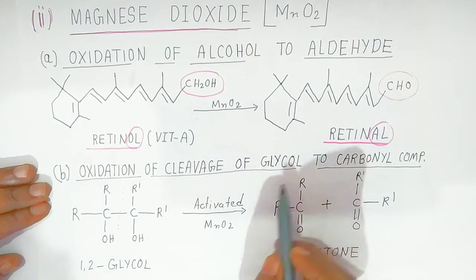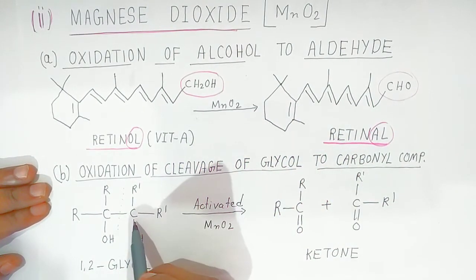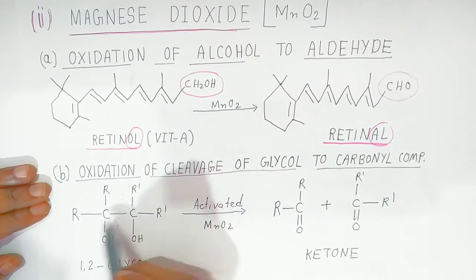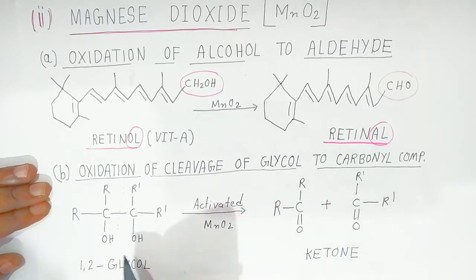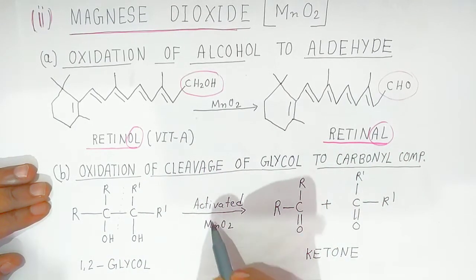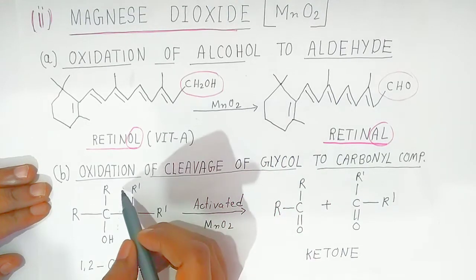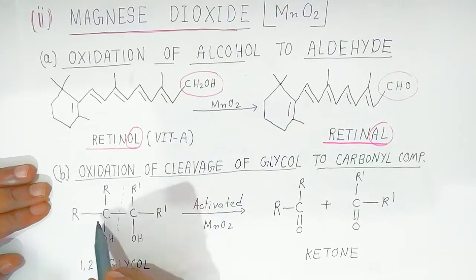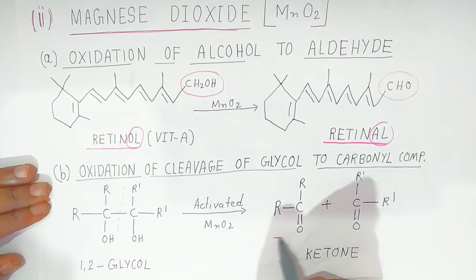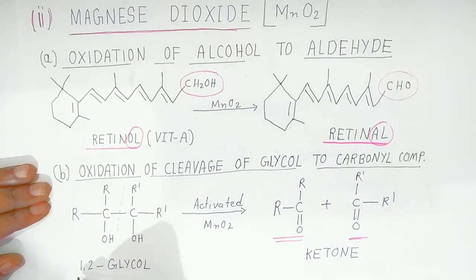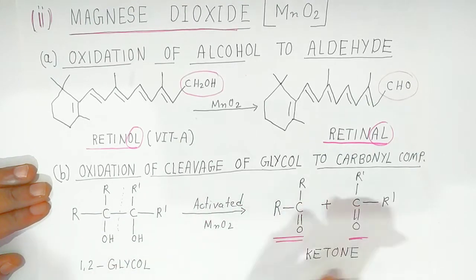Oxidation — cleavage of glycol. Here, OH is present at two adjacent carbons, which is why it is called a glycol. In presence of activated manganese dioxide, there is a cleavage — a breakdown of the carbon-carbon bond — and you get two types of ketones. So 1,2-glycol is converted into two corresponding ketones.